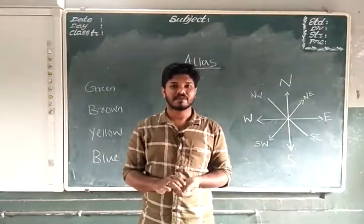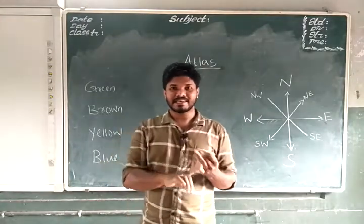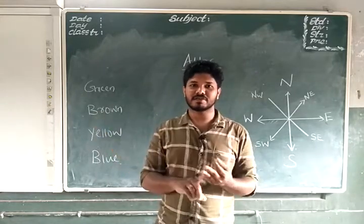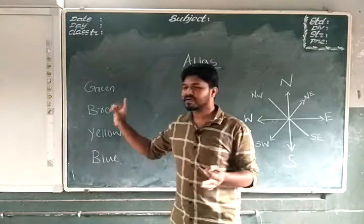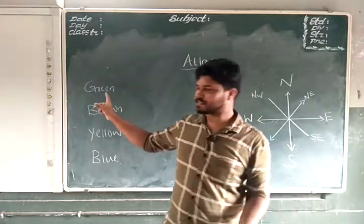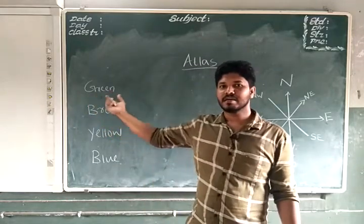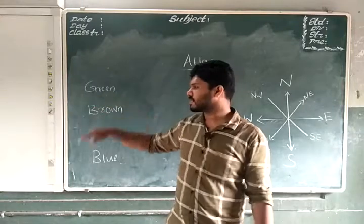But before we are reading or we are looking at an Atlas, we have to understand the symbols, then directions and also the colors that are used in the maps. We have basically four colors. We already discussed these ones. For plains, we generally give green colors. That is the region at the sea level. For that, we will be giving green color.